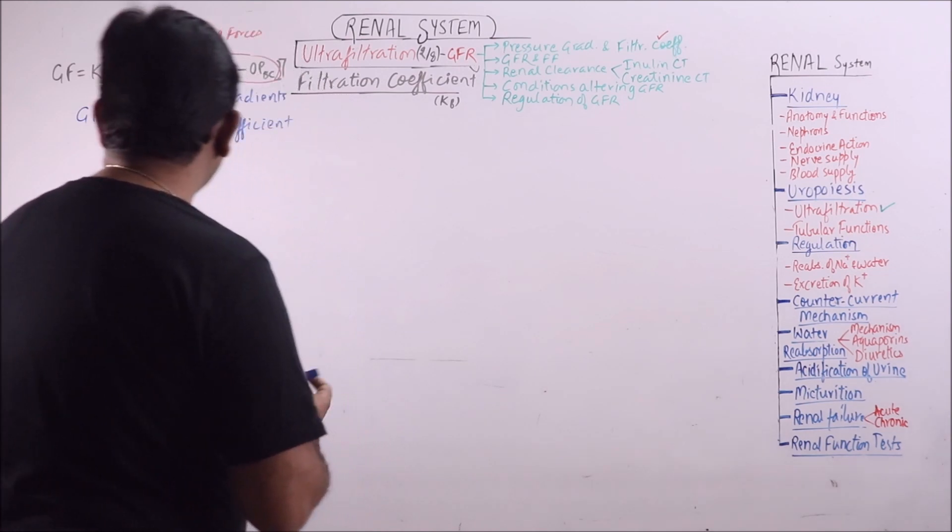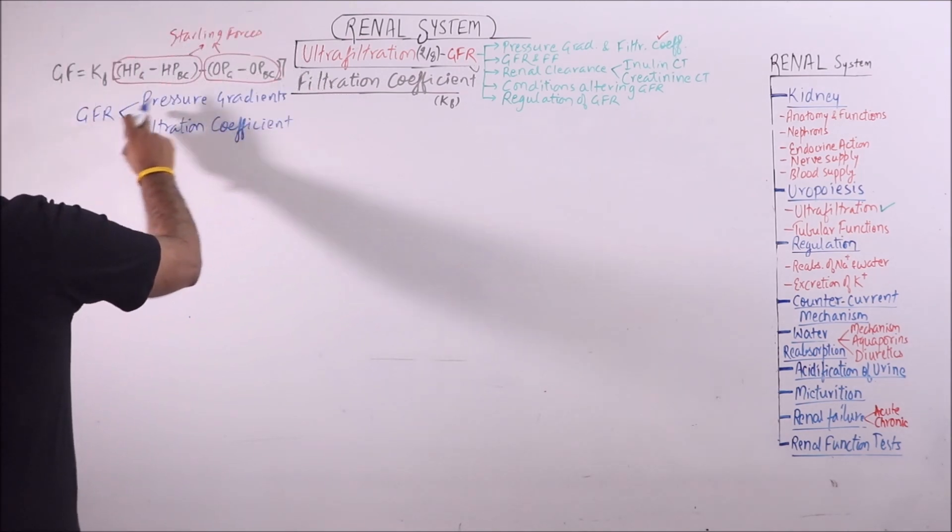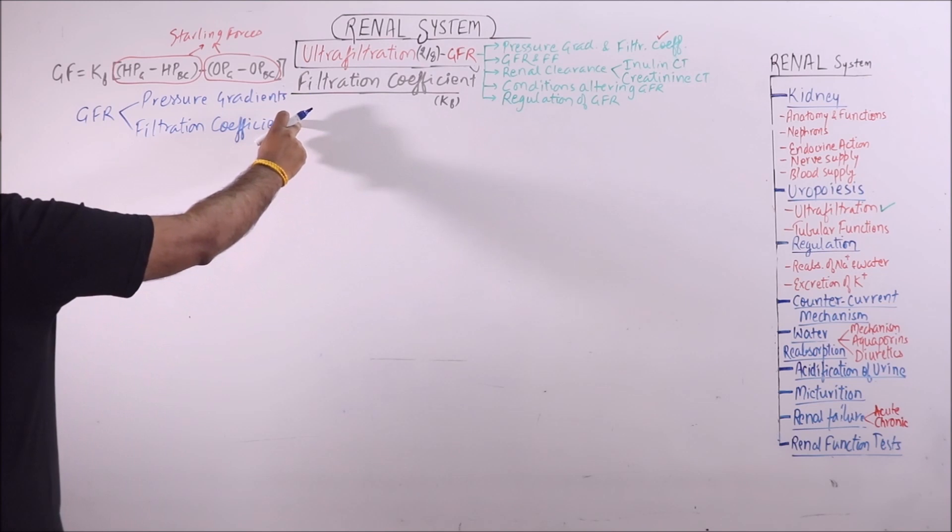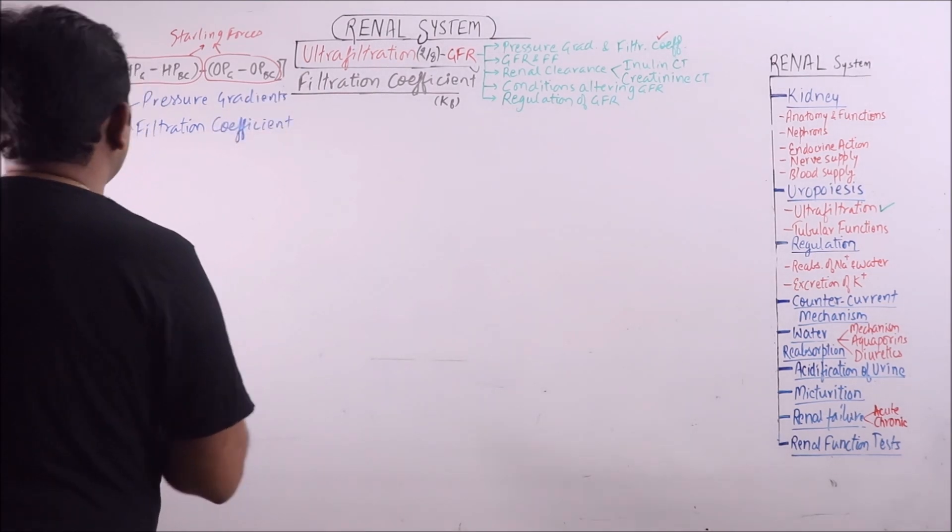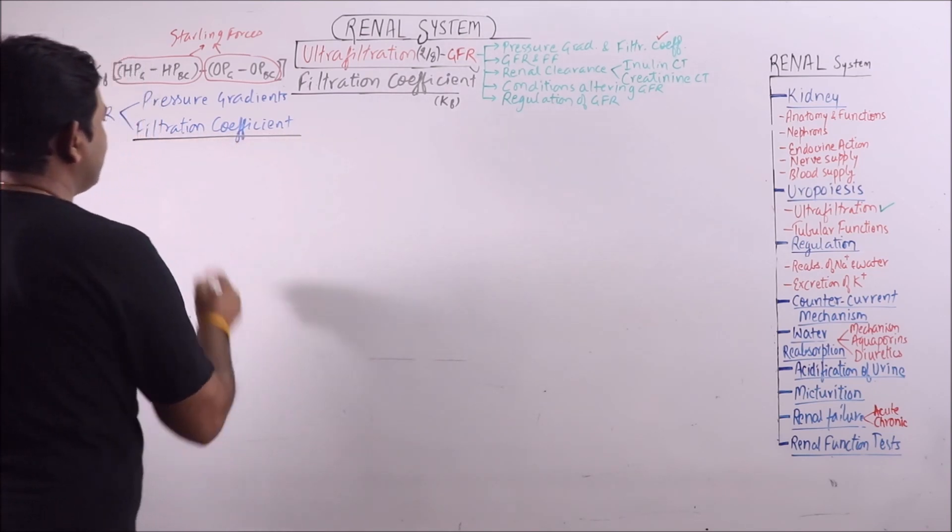We have discussed in the previous lecture that GFR mainly depends upon two factors: pressure gradients and the filtration coefficient. We discussed pressure gradients in the previous lecture, and in this lecture I am going to discuss the filtration coefficient.